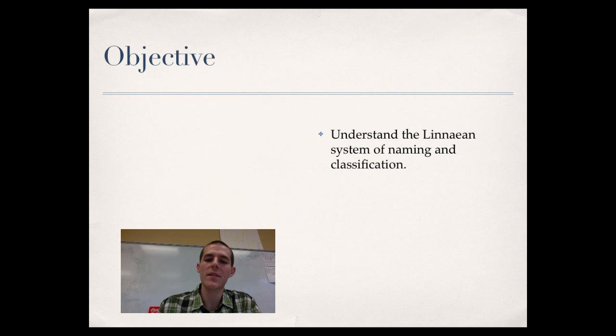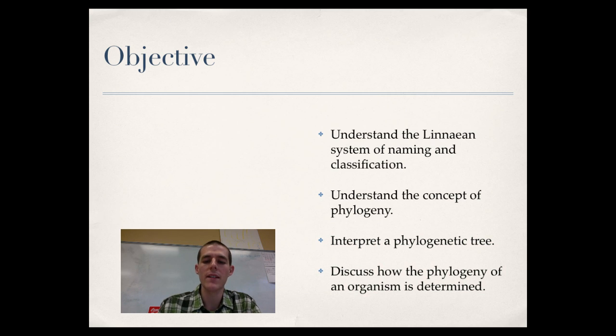So four objectives today. First one, understand the Linnaean system of naming and classification. Second one, understand the concept of phylogeny. Third, interpret a phylogenetic tree. And finally, discuss how the phylogeny of an organism is determined. So without further ado, let's go ahead and get going.